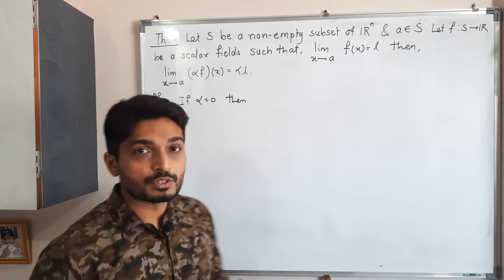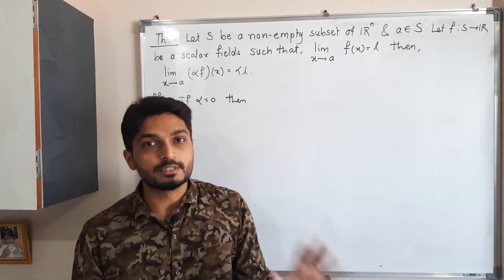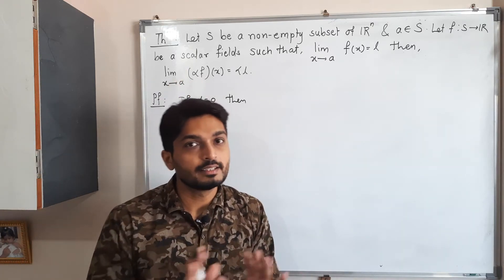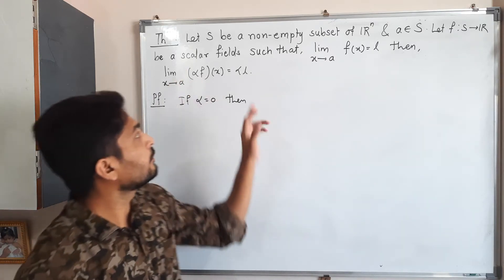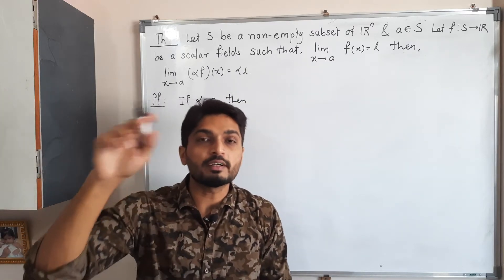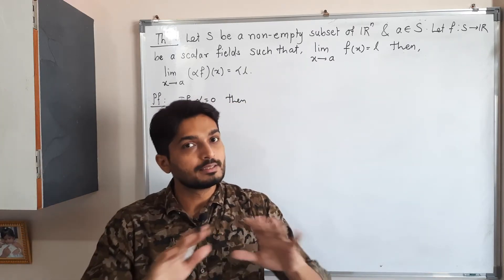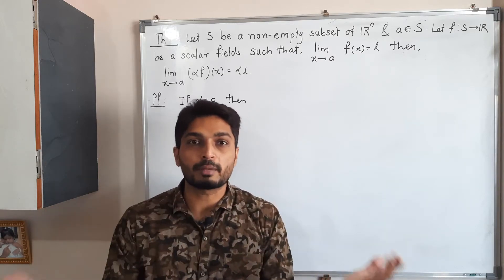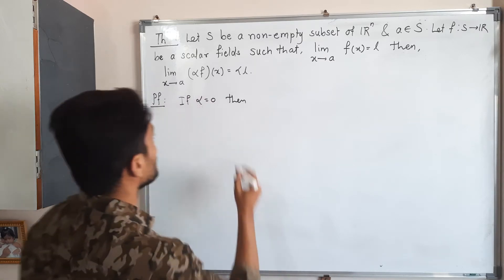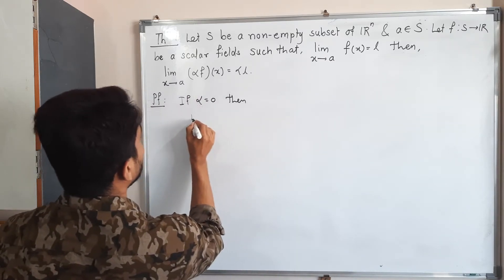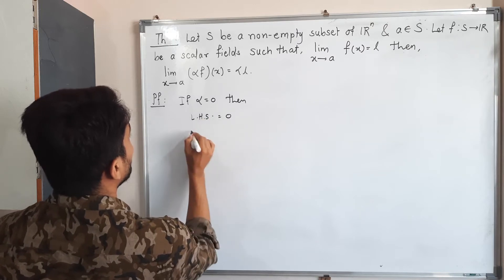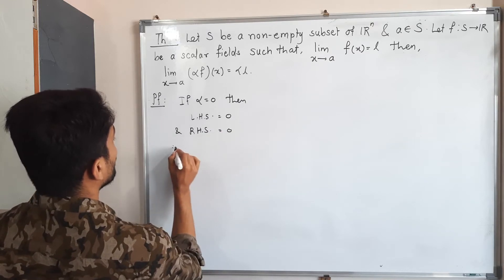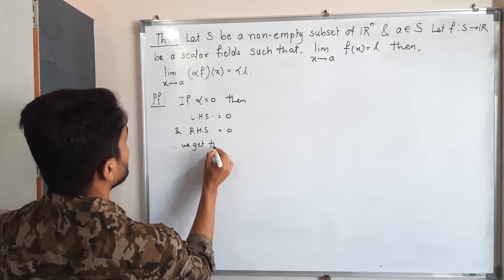For Case 1, if alpha equals zero, then alpha times f(x) is zero times anything, which is zero — so the left-hand side is zero. On the right-hand side, alpha·l is also zero times anything, which is zero. Left-hand side equals right-hand side, so the result is obvious in this case.